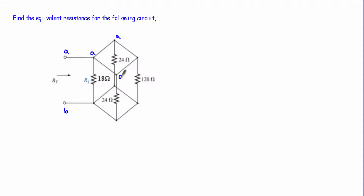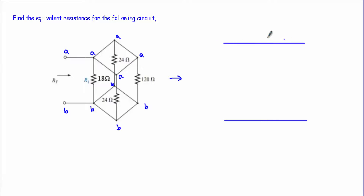I can go to this point, and this point, and this point because these are short paths. I cannot go below certain points because I will encounter resistors of 18 ohm, 24 ohm, and 120 ohm — that means our A points end here. Now for the B point: as this is a wire, this will be B point, this will be B point, and this will be B point. So if I simplify this circuit, I will get a redrawn circuit considering points along the wire as our point A.